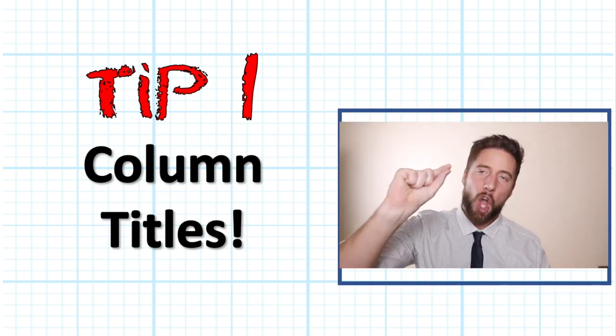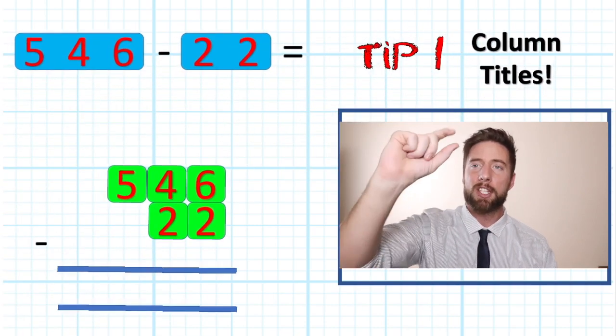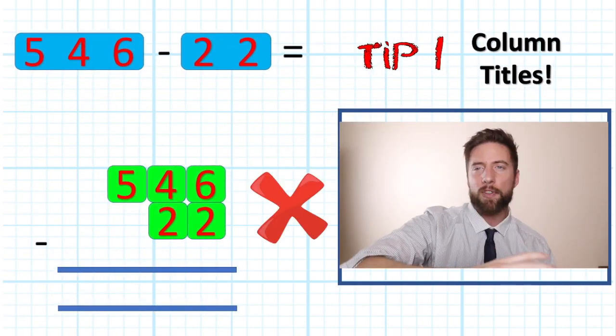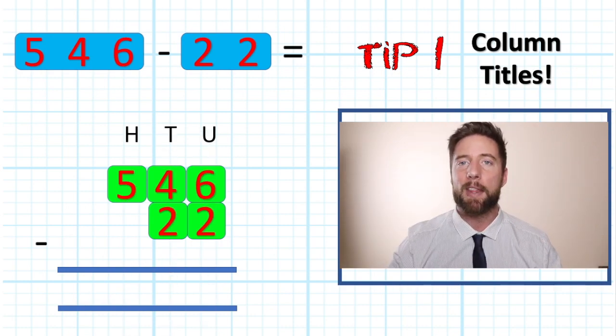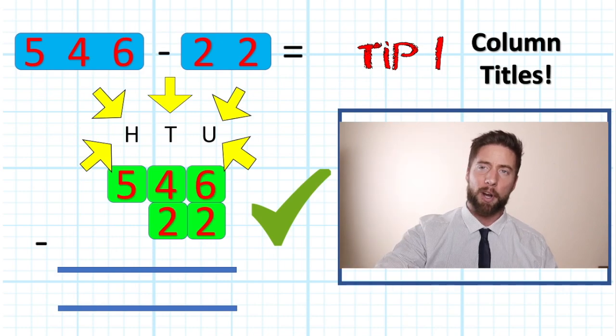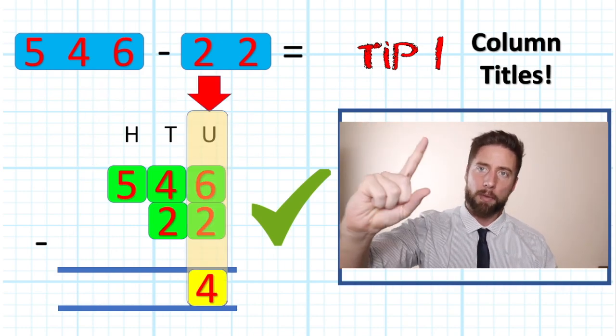Tip number one: column titles. Put your column titles above the correct columns. Units, tens, hundreds, thousands, ten thousands, hundred thousands, millions, ten millions, hundred millions—whatever it is, get them in there so we are aware of what we are doing in the operation at the time. Okay, tip number one: column titles.